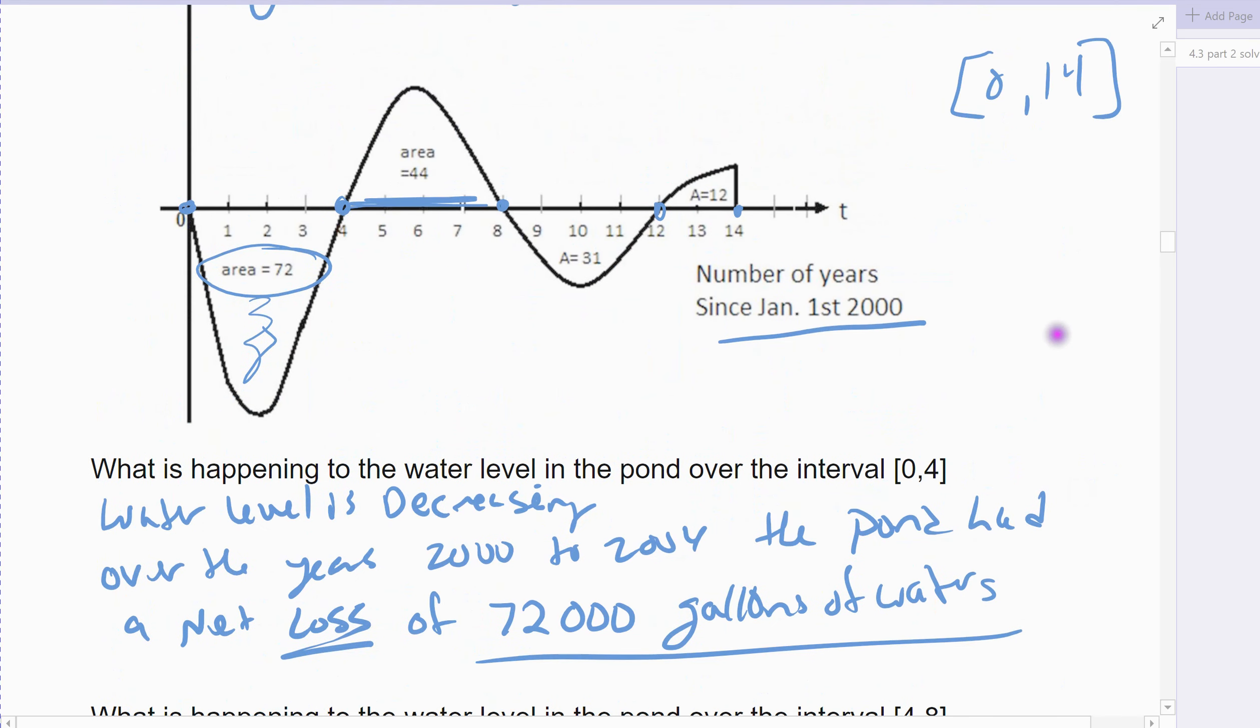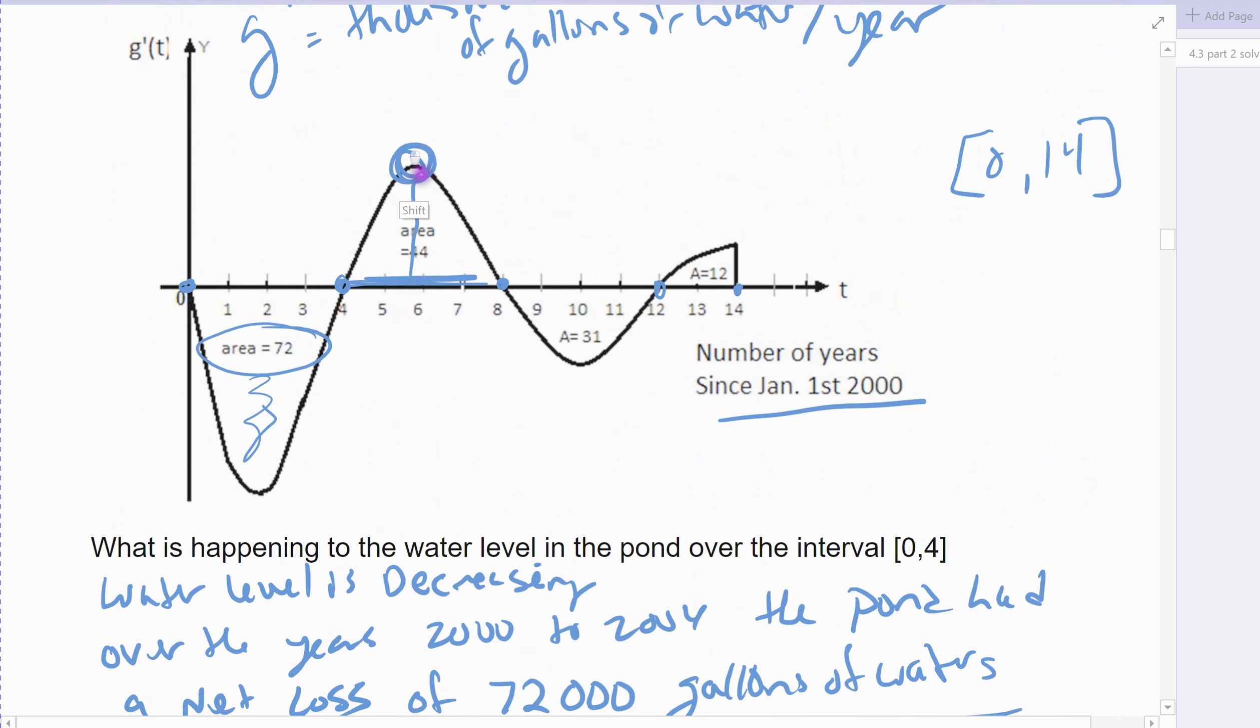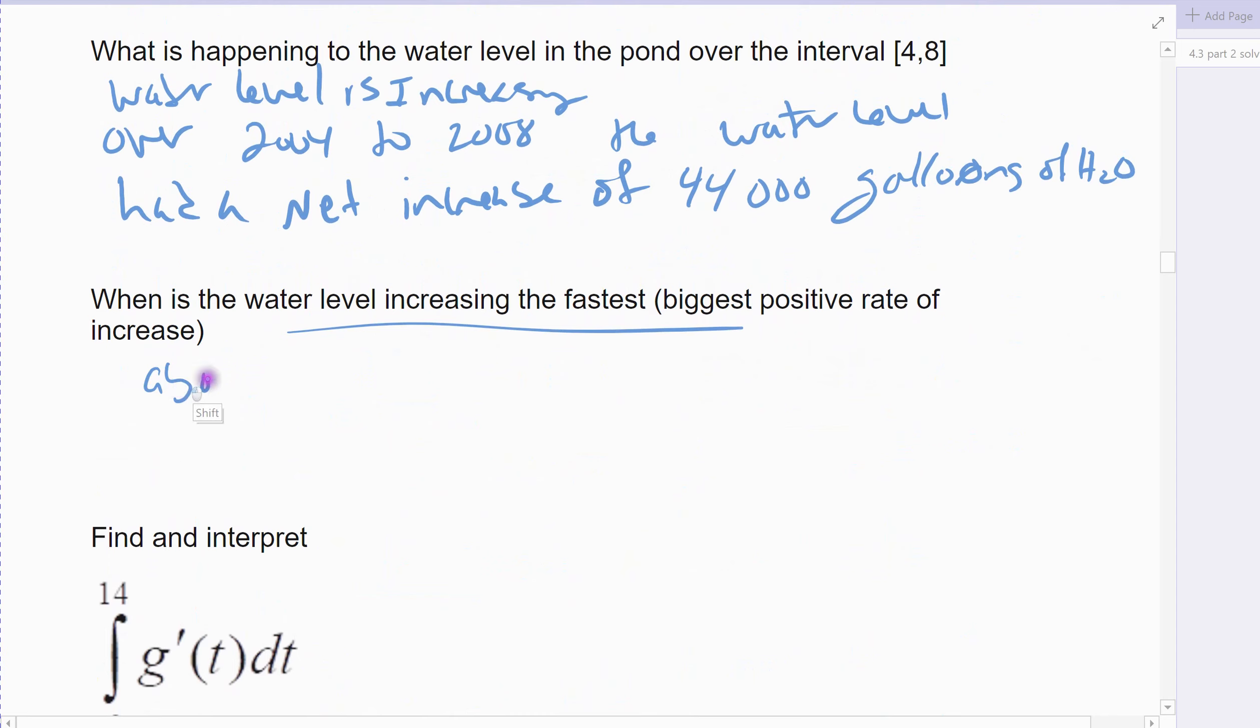Well, that would be when I have the biggest rate of change. Well, the biggest rate of change looks like it happens around right here. This would be the biggest slope, which is the biggest rate of increase. Because these would be rates of decrease. Nowhere else does it get a higher peak. And so I'm going to say it's close to the year 2006.